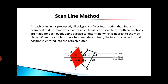Scan line 1 is intersecting at E1, E2, E3, and E4. The portion of the scan line from E1 to E2 is completely inside polygon S1. Therefore, the portion from E1 to E2 will be displayed with the color of polygon S1. The same way, the portion from E3 to E4 is completely inside polygon S2, so it will be displayed with the color of polygon S2.